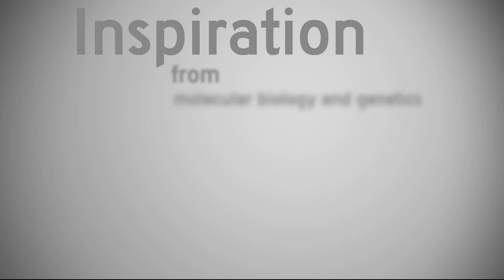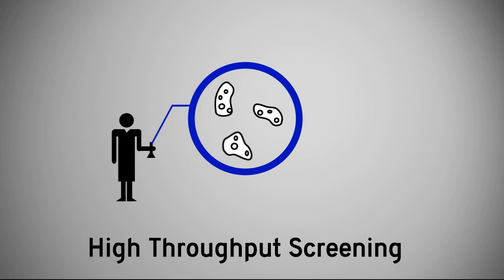Our approach is to adapt high-throughput screening techniques from molecular biology to solve this problem. When biologists want to find an organism, say a bacterium, that has a particular property of interest, say, resistant to a particular kind of antibiotic, they don't test one bacterium at a time.